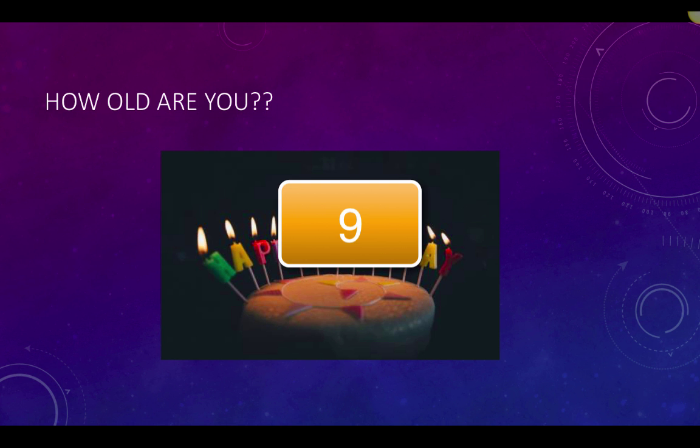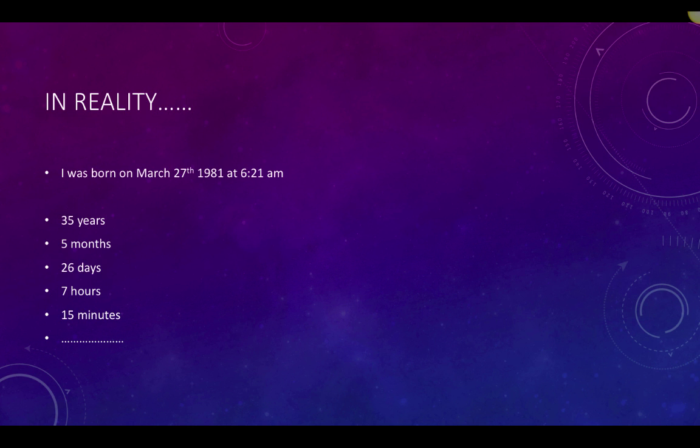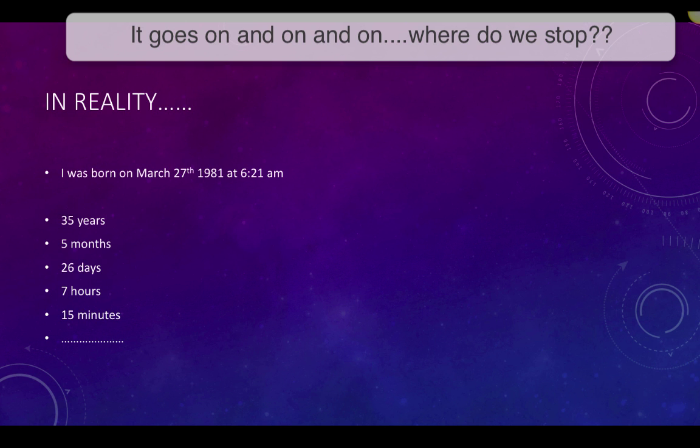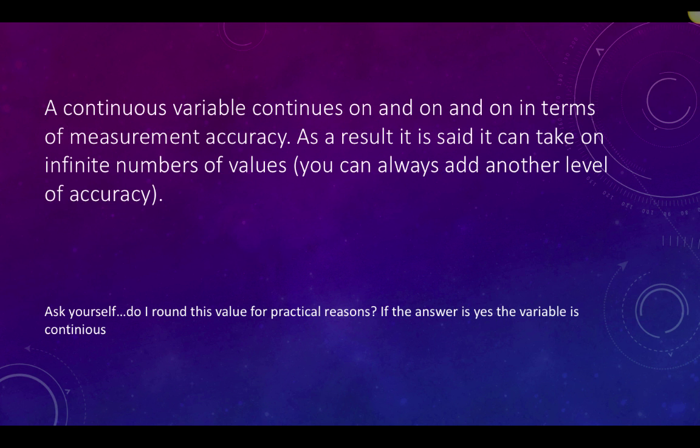However, that's not actually a 100% accurate measurement of your age. In reality, we could measure down to a more precise level of accuracy. For example, I was born on March 27, 1981 at 6:21 AM. Therefore, at the time of this recording, I was 35 years, 5 months, 26 days, 7 hours, 15 minutes. You get the idea. The level of accuracy can continue on forever. This is known as a continuous variable.